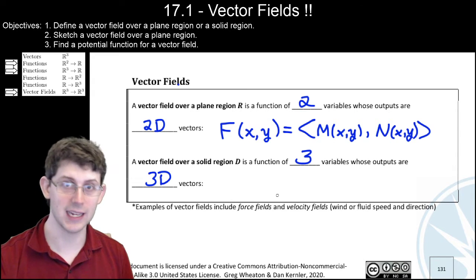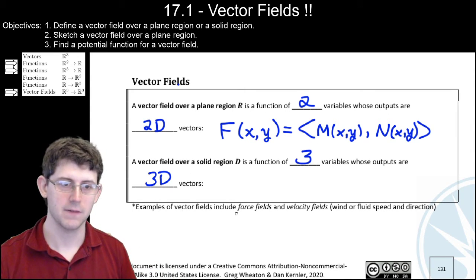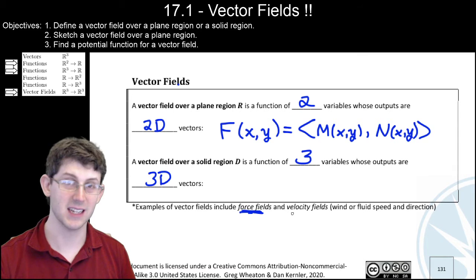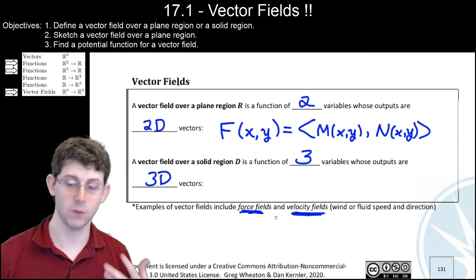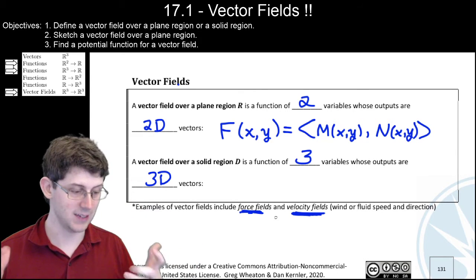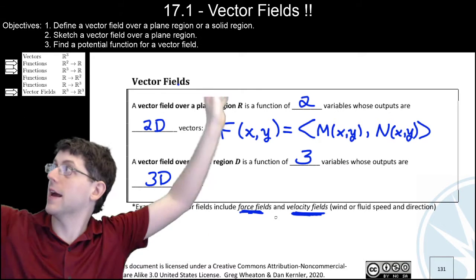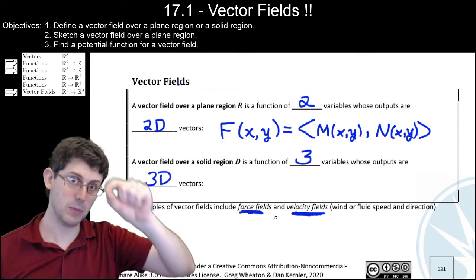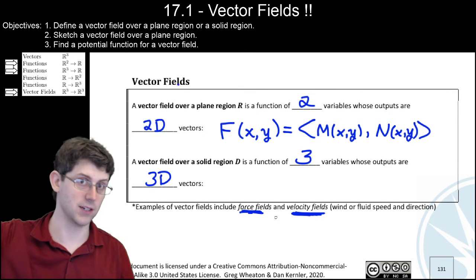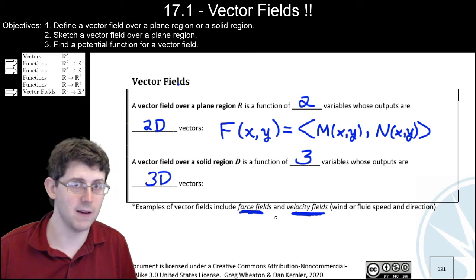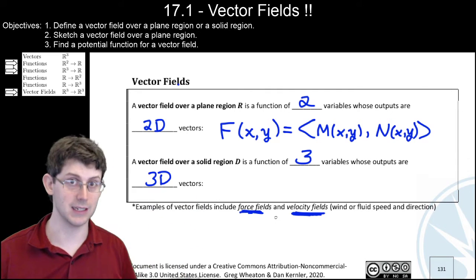So other than the gradient, where do vector fields come from? Vector fields are most often seen as force fields or velocity fields. If you imagine what a vector field in space has to do — at every point in space, like all the air around the Earth, there's an arrow that tells you magnitude and direction. Why would you ever assign a vector to every point in space?